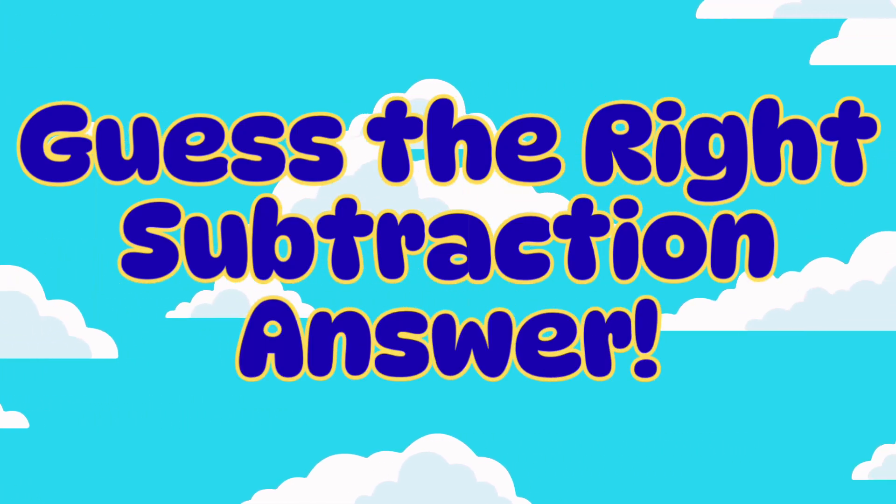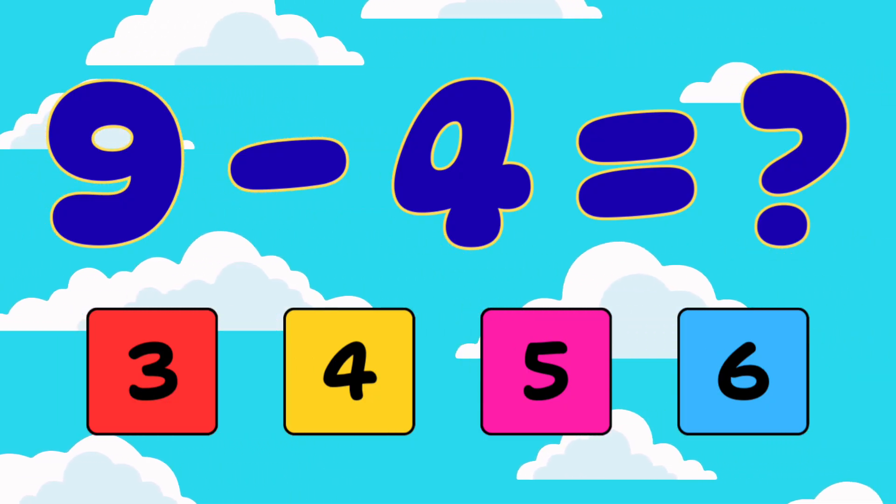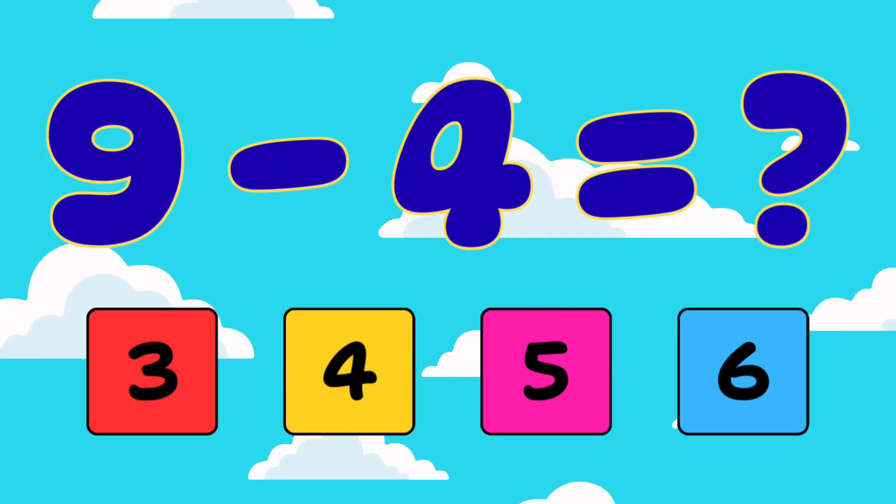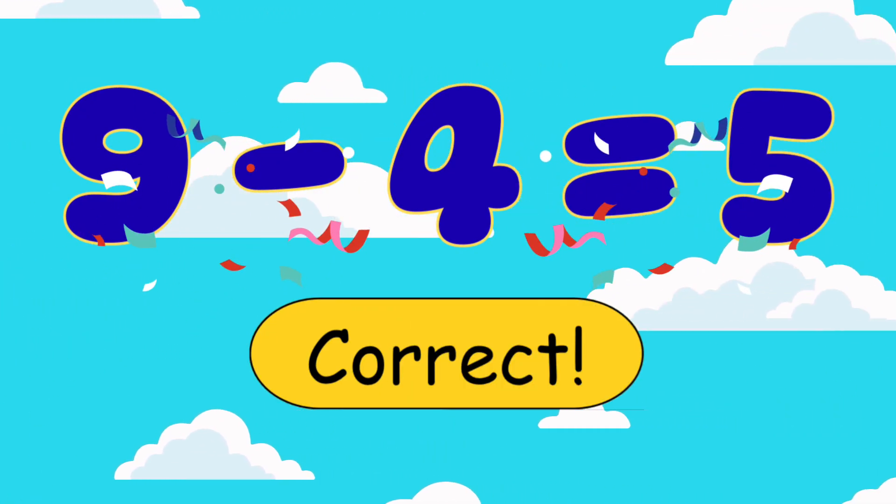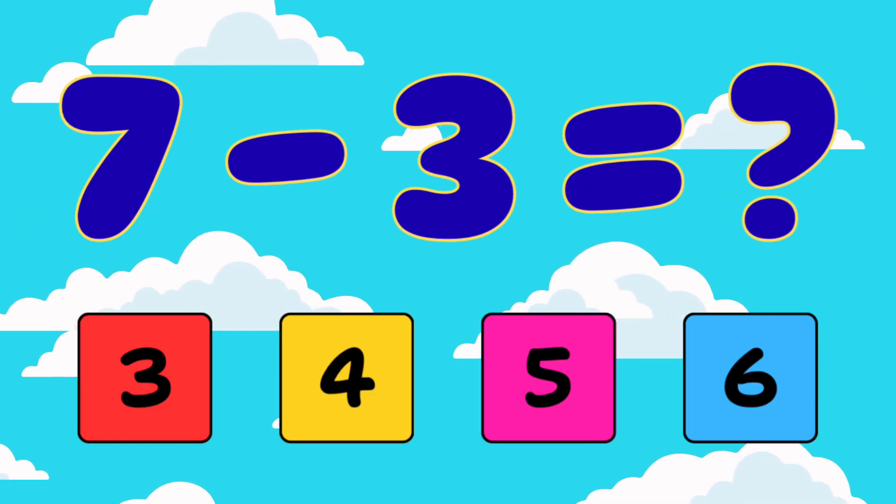Here's your first question. What is 9 minus 4? Think carefully. Correct! 9 minus 4 equals 5. What is 7 minus 3?